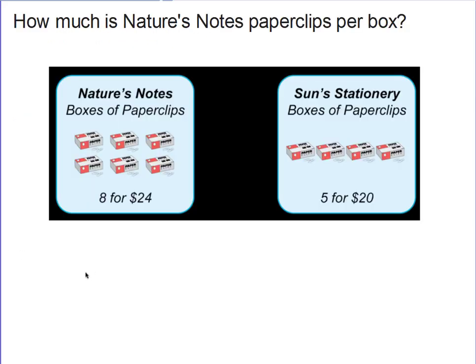So let's see if we can do a couple questions here and determine a better buy situation. So here we go. We've got two products here of types of paperclips. It says, how much is Nature's Notes paperclips per box? So we look over here at the Nature's Notes right here, and it says we've got eight boxes for $24. That doesn't show eight boxes here. It shows only six. But we go by the information here. It says eight for 24.